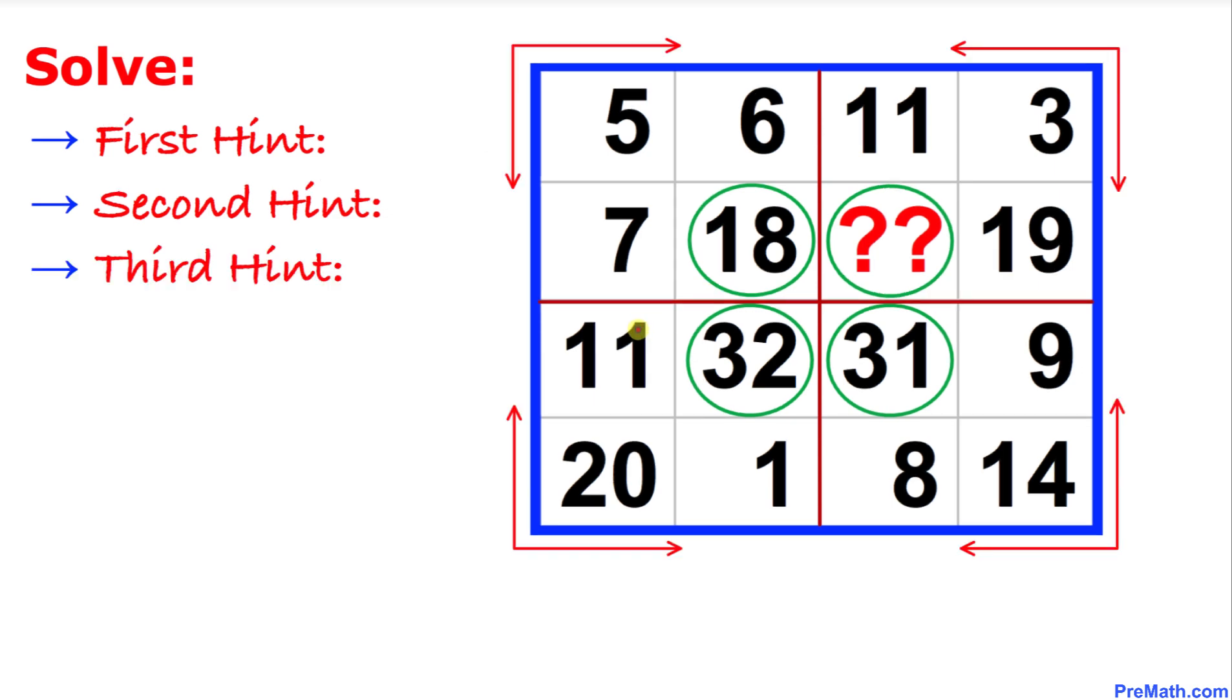And here is the next and the final hint. And these arrows means that we must be focusing on the side values. And if you got your answer with this hint that is amazing.